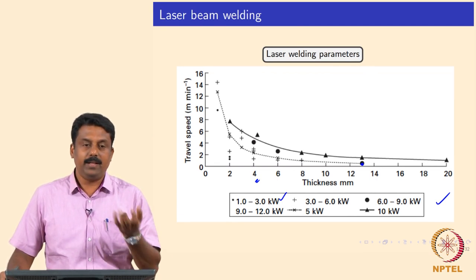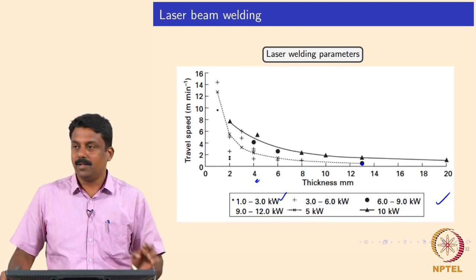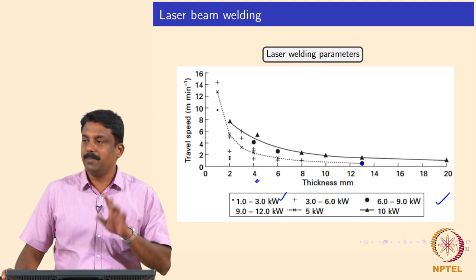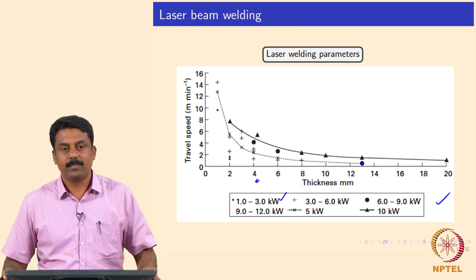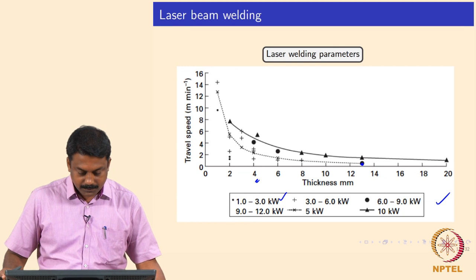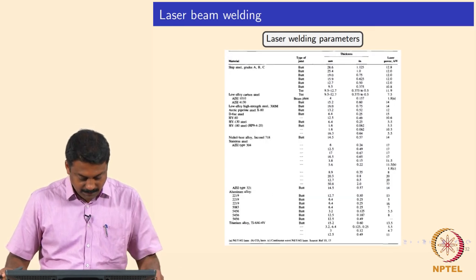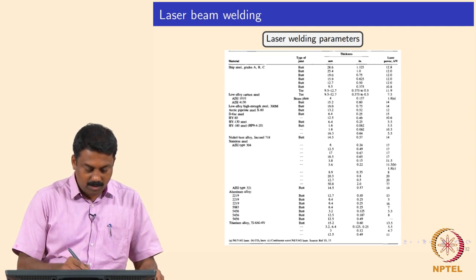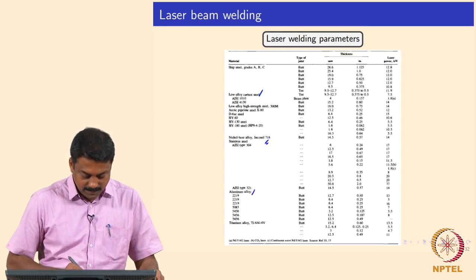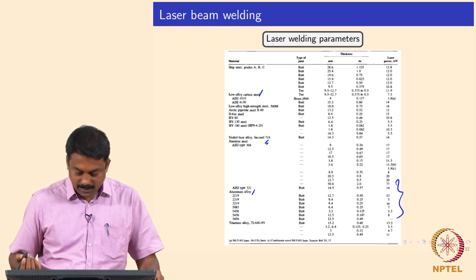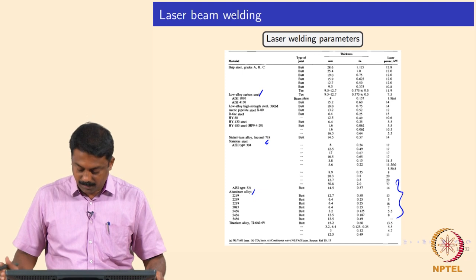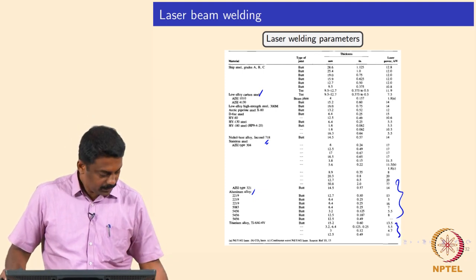So it is very simple. Compared to gas tungsten arc welding where you have to think about current, voltage, shielding gas - all factors affecting penetration - in laser welding it is simply power and travel speed that control the welding parameters. For commonly used materials like low carbon steels, pipeline steels, nickel-based Inconel 718, and aluminium alloys - aluminium alloys always need very high power because of poor power absorption. The same goes for titanium, which also needs slightly higher power.